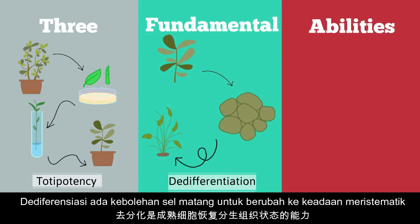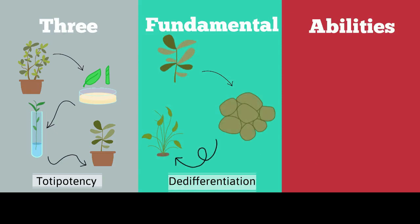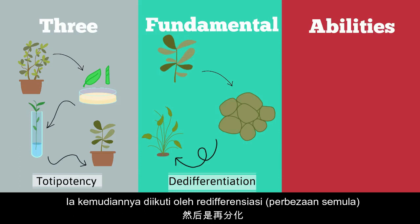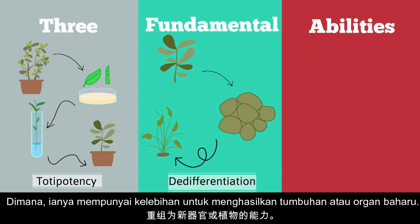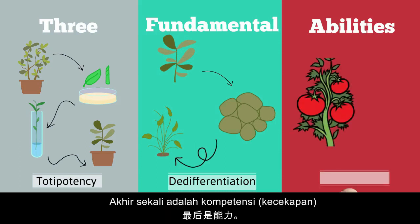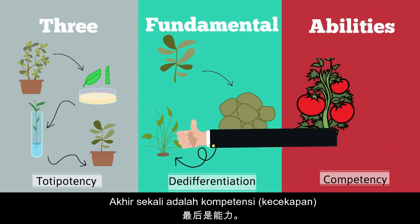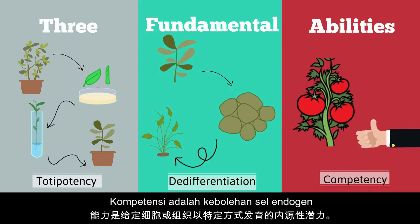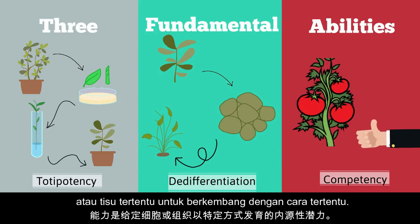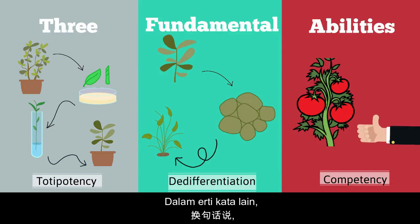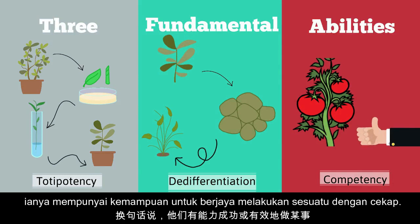The second ability is de-differentiation — the capability of a mature cell to return to a meristematic condition. It is also followed by re-differentiation, which is the ability to reorganize into a new organ or plant. Lastly, competency is the endogenous potential of a given cell or tissue to develop in a particular way — in other words, the ability to do something successfully or efficiently.